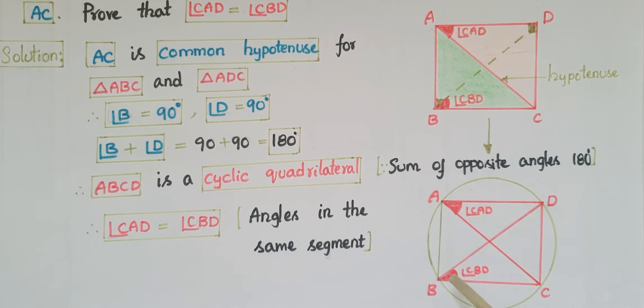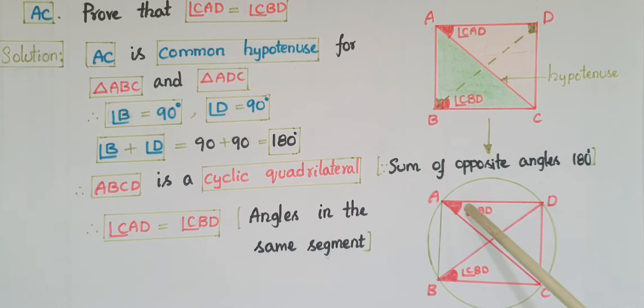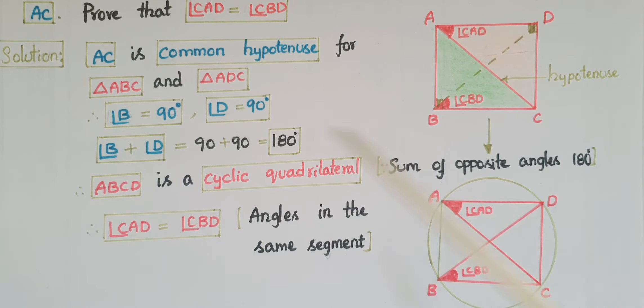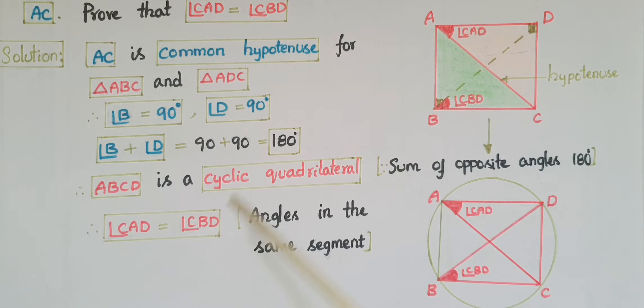Now, if you observe, these two angles are angles in the same segment. We know that angles in the same segment are equal. Therefore, angle CAD is equal to angle CBD.